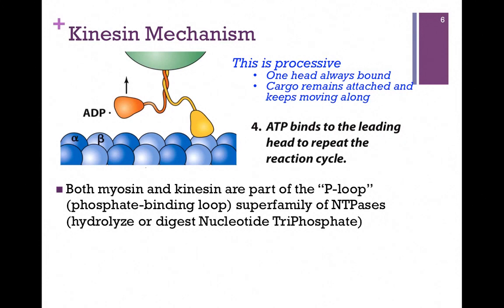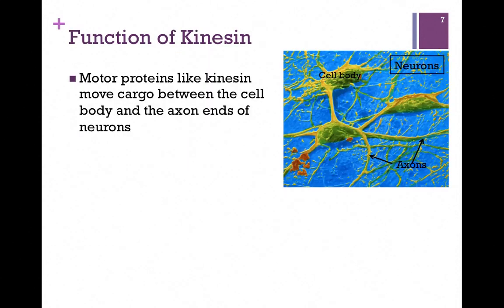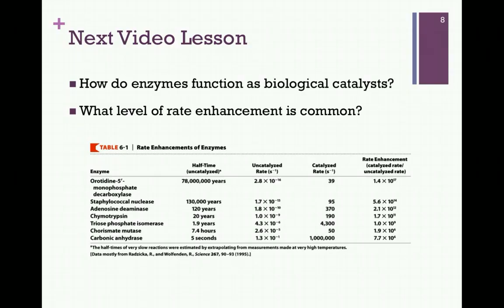You'll need this information in answering some of the homework questions. An example of how we might use kinesin as a motor protein: it might move cargo between the cell body of a neuron and its axons. That can be quite a distance, so we need to make sure it's going to hold on to that cargo - that's why we need the light chains - and that it's going to keep walking forward until it gets to where it needs to go. This concludes our studies in Chapter 5.